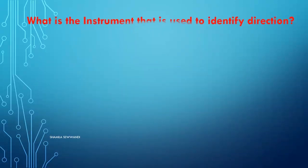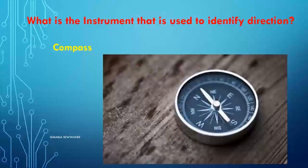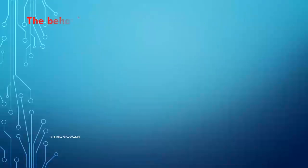What is the instrument that is used to identify direction? The answer is compass. The pilot, sailors, explorers, and soldiers use the compass to find their direction.